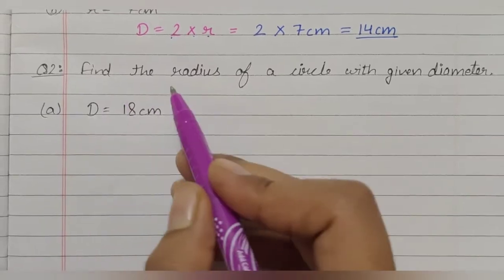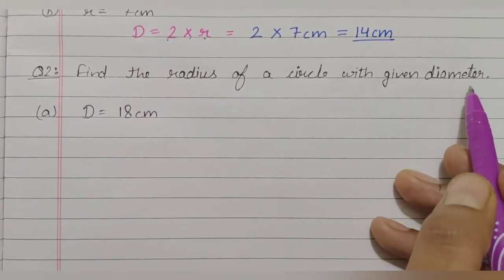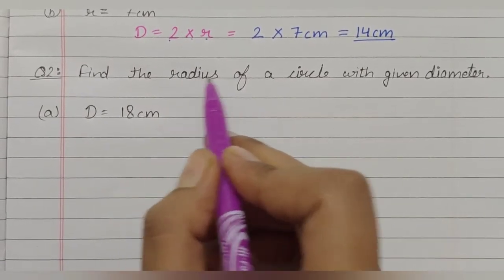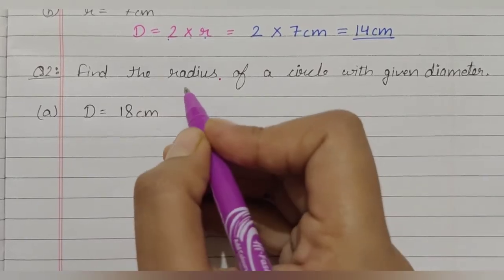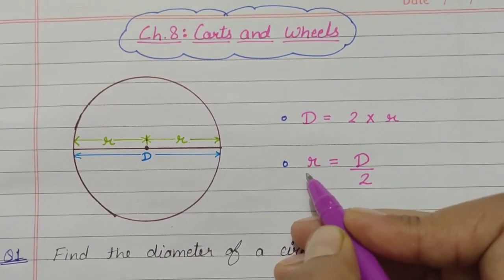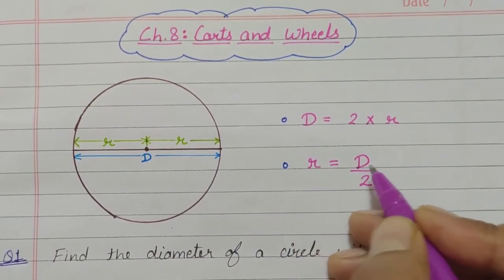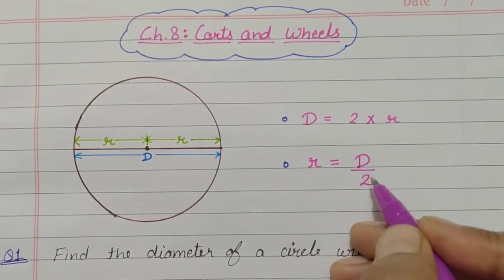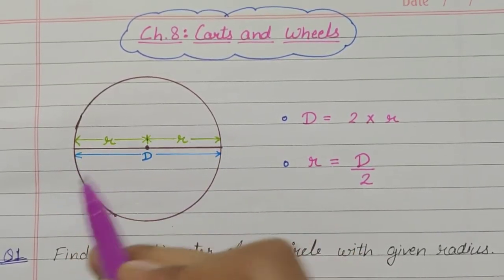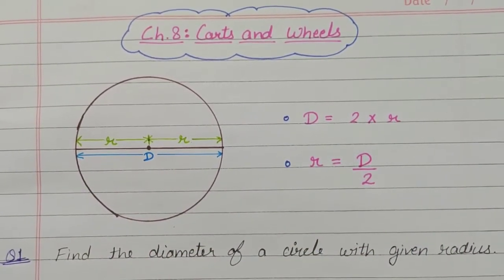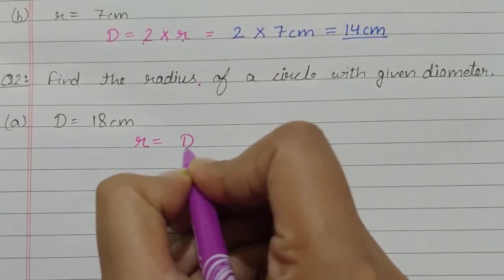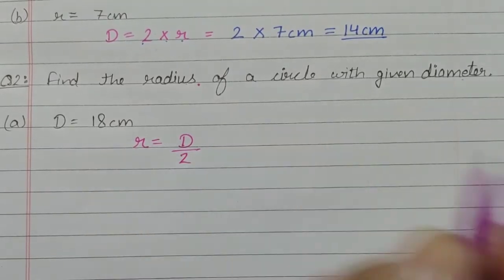Question number two: find the radius of a circle with a given diameter. This time you will have a diameter and you have to find the radius. So, this time we are going to use the second formula, that is r is equal to diameter divided by two. To find the radius, we divide the diameter into two equal parts. Write the formula: radius is equal to diameter divided by two.